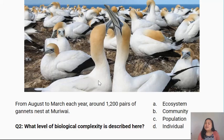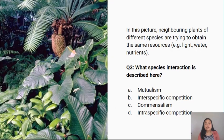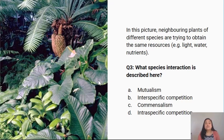Question 3: In this picture, neighbouring plants of different species are trying to obtain the same resources — light, water, and nutrients. What species interaction is described here? A) mutualism, B) interspecific competition, C) commensalism, or D) intraspecific competition. Question 4: In this picture, anemone shrimps live within the tentacles of host sea anemones to gain protection from predators. The sea anemone is neither harmed nor benefited. What species interaction is described here?